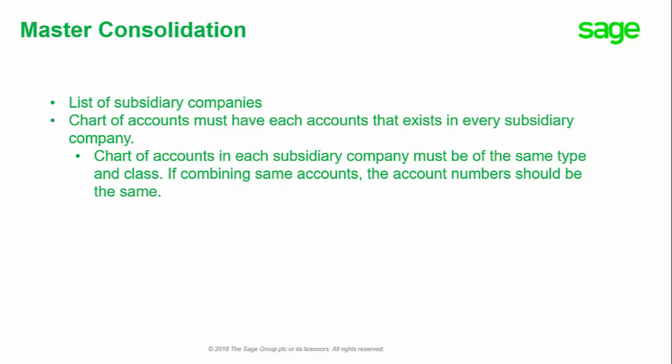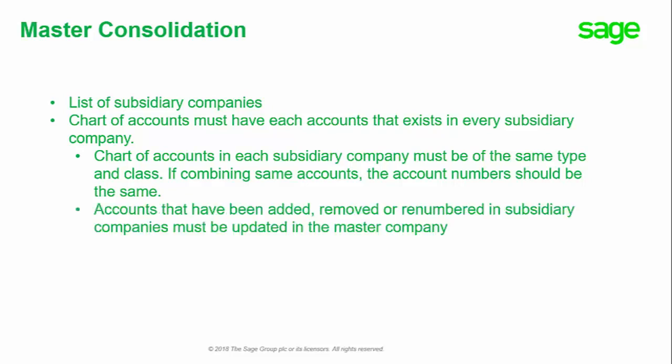For example, if you have salaries and payroll tax expense accounts in each of your subsidiary companies, the GL account number, account type, and account class must be the same in each of the companies in order for your financials to combine into one account in your master company. Whenever you add, remove, or renumber an account from one of your subsidiary companies' chart of accounts, you should also make that same change in the master company's chart of accounts using either Build Chart of Accounts or Maintain Chart of Accounts.